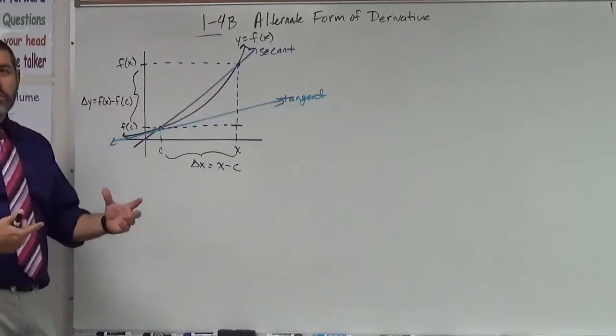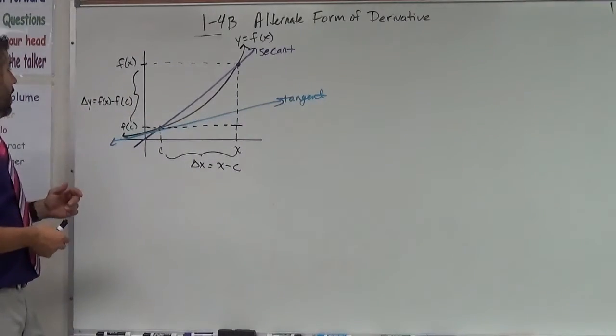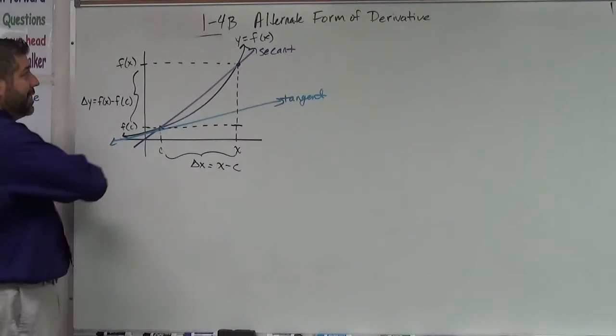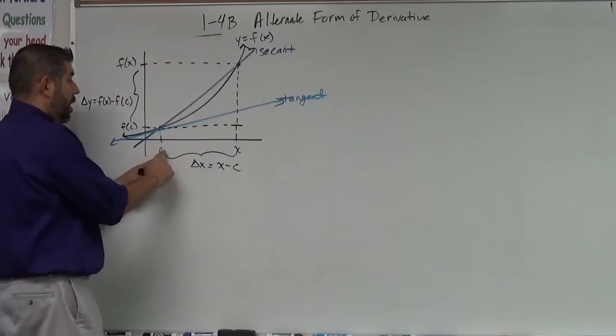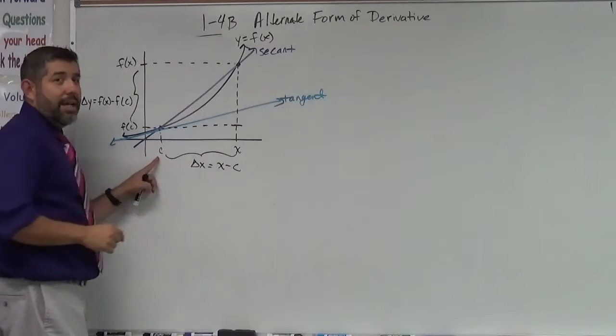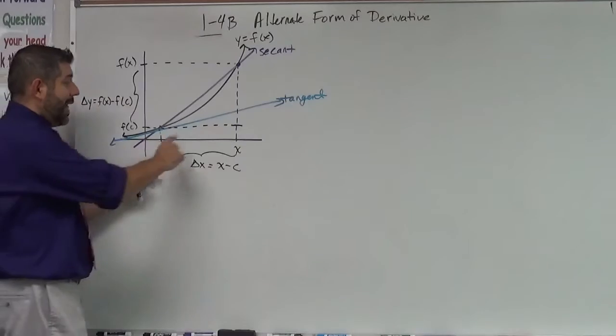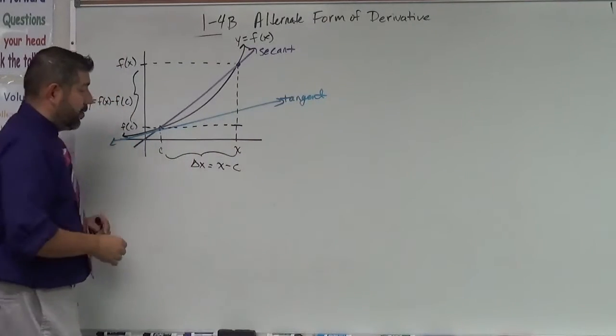So I've got this picture up here that I had in the last video and the only thing different I've got is my same secant line, my same tangent line. The difference is I've labeled my points down here differently. And last time I had x and I had delta x or I had x plus delta x because that was the difference.